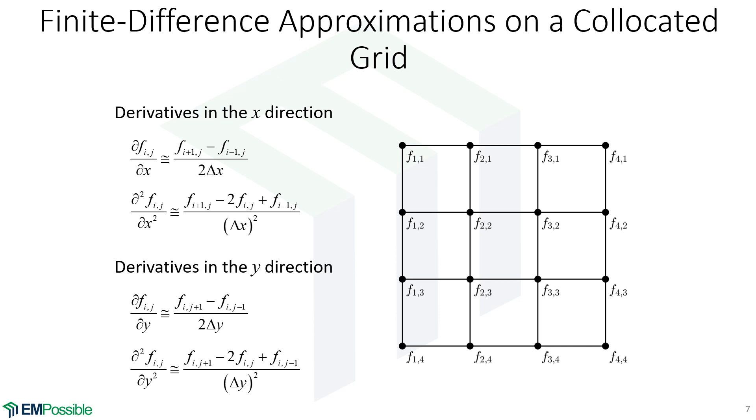Our second-order derivative, let's say we're calculating at f2,1, would be f3,1 minus 2 times f2,1 plus f1,1 divided by delta x squared. That's derivatives going horizontally. Almost the same thing for derivatives in the y direction. The first-order derivative in the y direction at f3,3 would be f3,4 minus f3,2 divided by the spacing between them, 2 delta y.